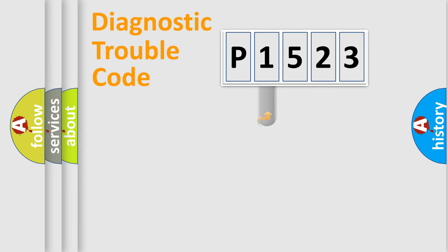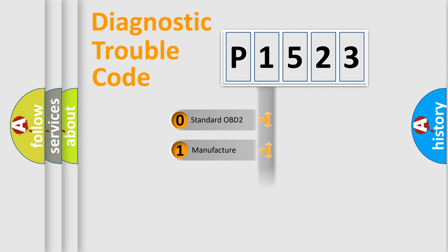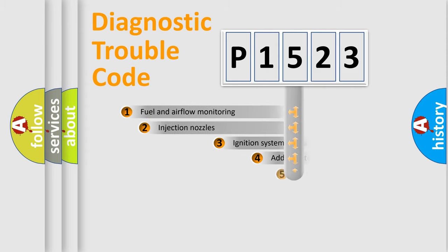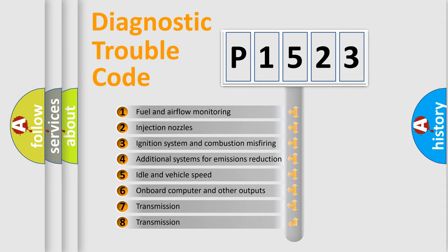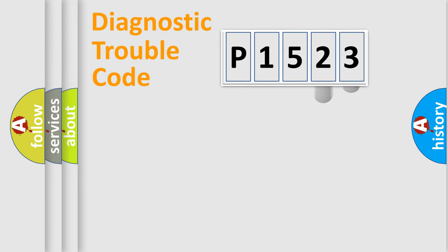This distribution is defined in the first character of the code. If the second character is expressed as zero, it is a standardized error. In the case of numbers 1, 2, or 3, it is a more specific expression of a car-specific error. The third character specifies a subset of errors, and this distribution is valid only for the standardized DTC code.